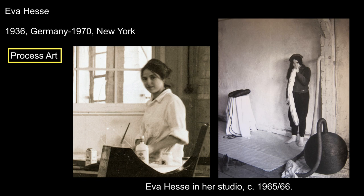Eva Hesse was born in Germany to a Jewish family and immigrated to the U.S. as a child. She went to art school and Yale University and was friends with many minimalist artists. As a sculptor, she responds to minimalism but uses her sculptures to express movement and emotion. Her works have more texture than minimalism and often take the pristine forms of minimalistic objects and make them tactile.